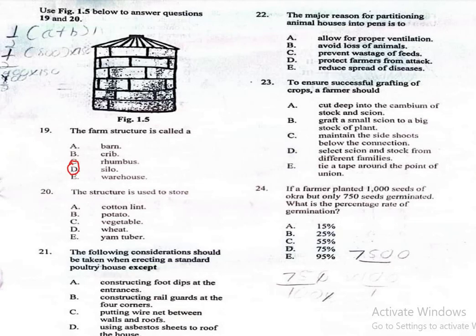Question 20. The structure is used to store: A. Cutting lint, B. Potato, C. Vegetable, D. Wheat, E. Yam tuber. The correct answer is wheat, which is option D.